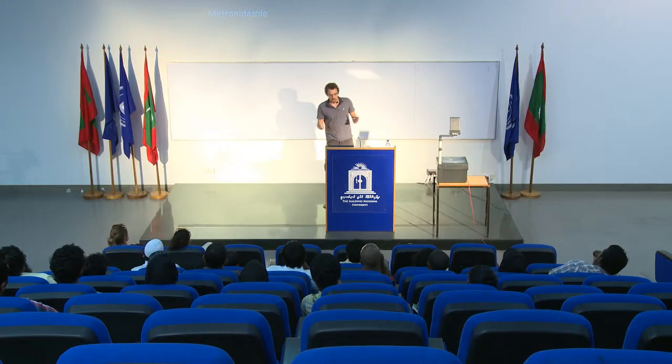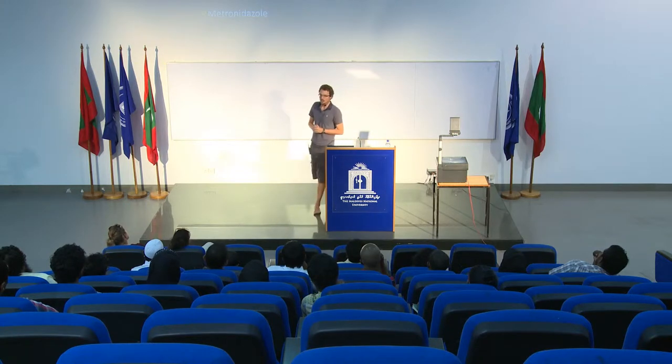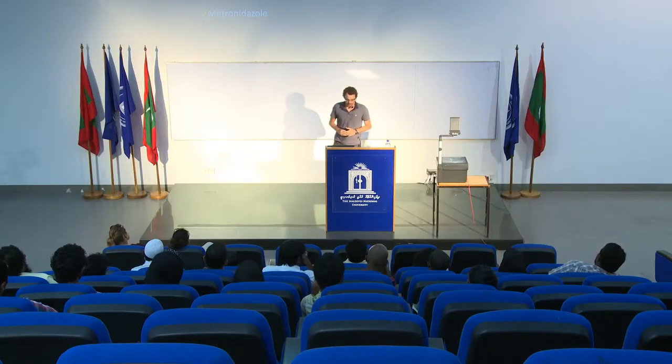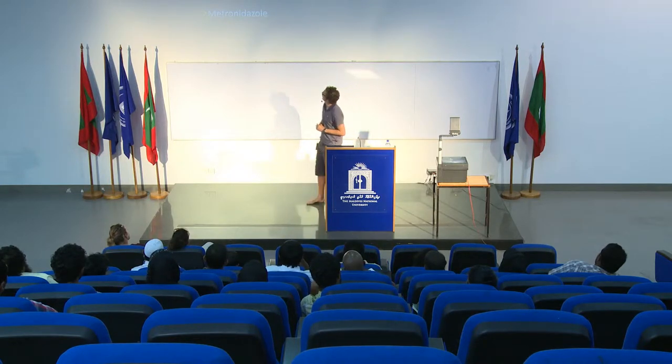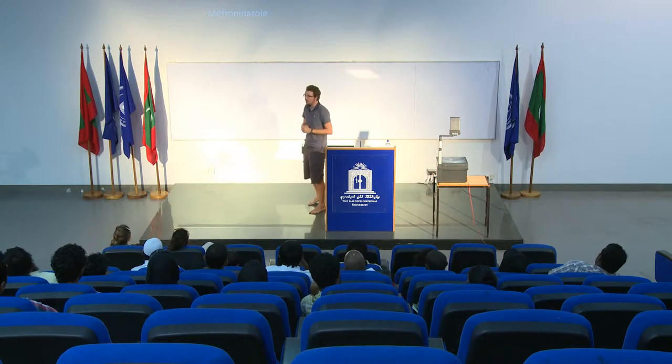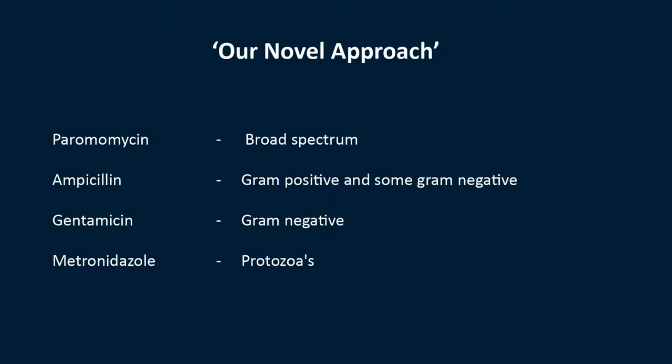We used this novel approach with four different antibiotics: paramycin, ampicillin, gentamicin, and metronidazole. Most of these are easy to get hold of. Paramycin particularly you have to beg, borrow, and steal — if you ask a big pharmaceutical giant, they'll usually give you a very small dose. It's really expensive, and we could only get enough to dose our corals once. Paramycin is a broad-spectrum antibiotic tackling bacteria, potentially fungi, and most importantly ciliates in our case.